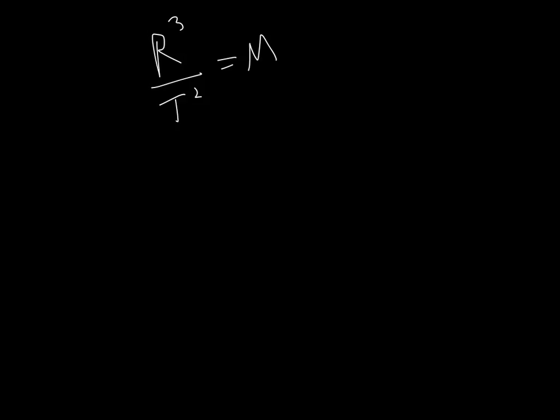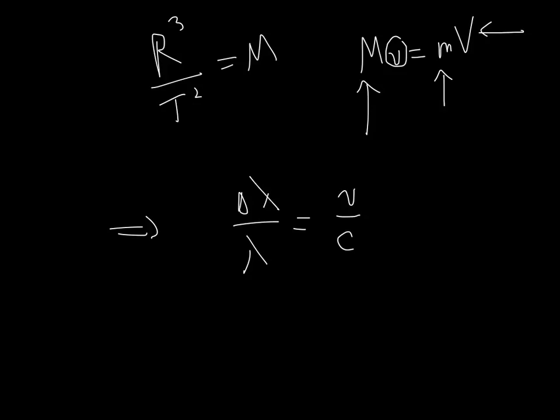Then, you take the fact that big M times little v is equal to little m times big V. This tells us if we know the mass of the planet relative to the mass of the star, and from the distance and the time, we can work out the speed of the planet, we have everything we know to compute the speed of the star. Once you have the speed of the star, then you can go to the Doppler relationship and figure out the fractional change in the wavelength, which is just the speed of the star divided by the speed of light.